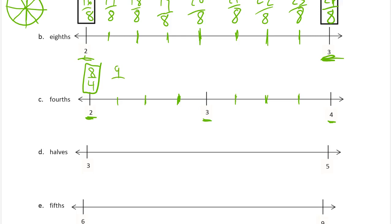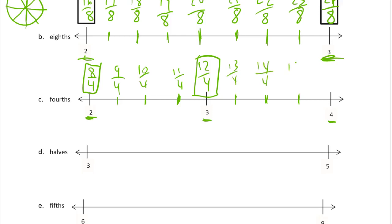Then we're just counting fourths: 9 fourths, 10 fourths, 11 fourths, 12 fourths — and we'll box that one because it's 3 wholes. 3 times 4 is 12, that's how many fourths it takes to make 3. Then 13 fourths, 14 fourths, 15 fourths, and 16 fourths — box that one because that's 4 wholes. With fourths, every fourth number should be a whole. And with eighths for part B, every 8 you should get a new whole.